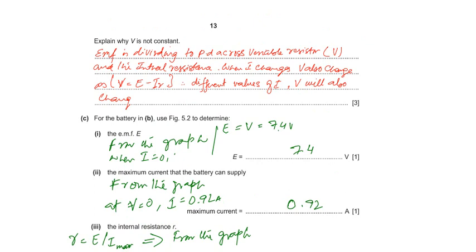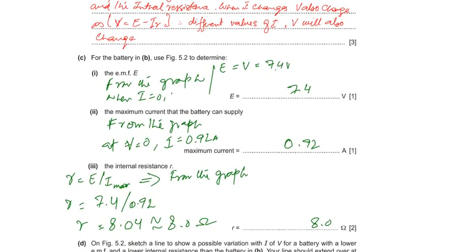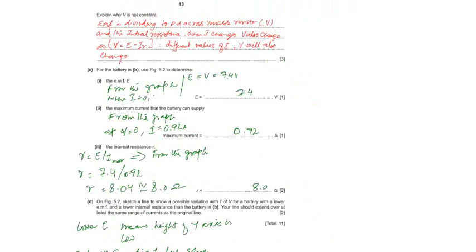Now next, for part C, for the battery B, use figure 5.2 to determine, so you're going to use the graph. EMF is what? When the current is zero, whatever the voltmeter shows will be the emf of the battery. EMF will be 7.4 volts. And what about the maximum current? When the voltmeter shows zero, the maximum current shown by the ammeter will be, from the graph, it is 0.92 amperes. 0.92 amperes is the maximum current that the battery can supply.